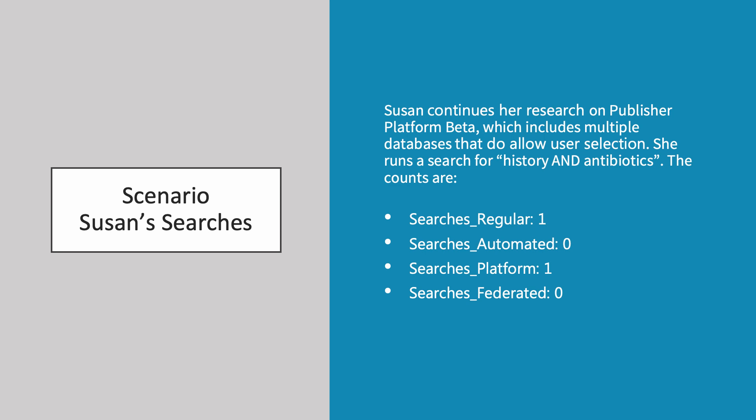Susan continues her research on publisher platform Beta, which includes multiple databases that do permit user selection. She reruns her search for history and antibiotics. The counts are 1 searches regular, 0 searches automated, 1 searches platform and 0 searches federated.